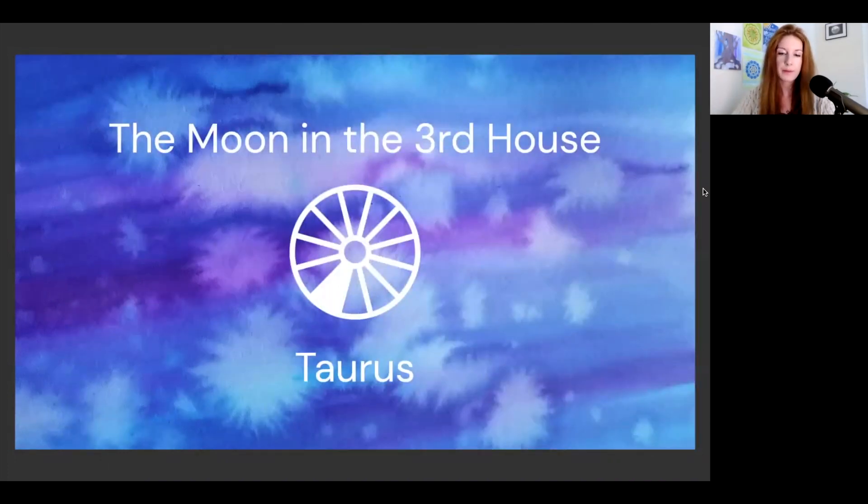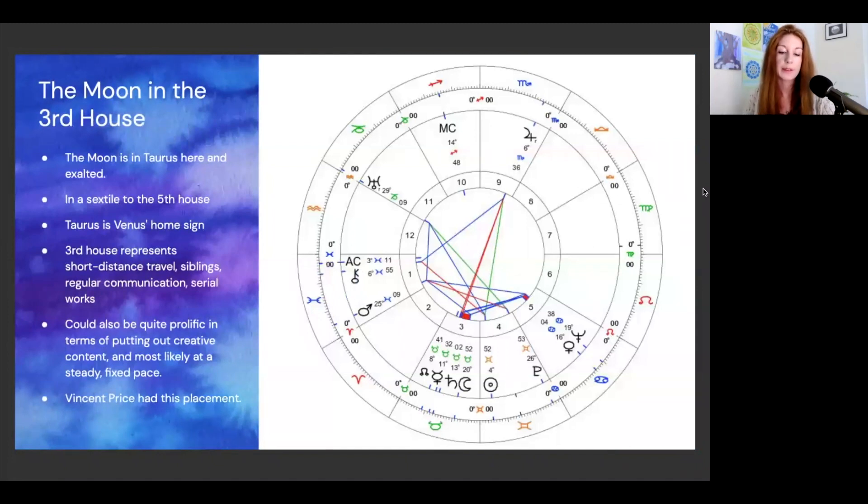The moon in the third house in Taurus. The moon here in the third house is exalted. This is the moon's place of exaltation. It's also in a sextile to the fifth house, which is an extra bit of support there. Taurus is Venus's home sign. The third house represents short distance travel, siblings, regular communications or publications, serial works, basically our local environment. The moon in Taurus can speak to financial security or anything that helps the native feel safe and supported. They might attract the finer things in life, material comforts. It might be that their creative work is pleasantly supported by their siblings or local community and environment. They could also be quite prolific in terms of putting out creative content and most likely work at a very steady, fixed pace.